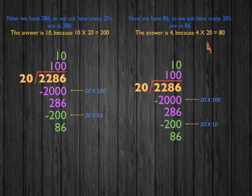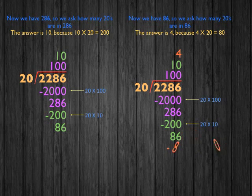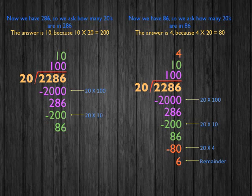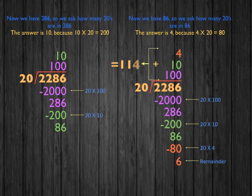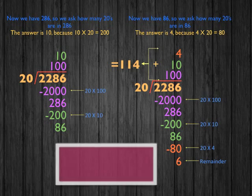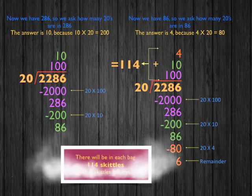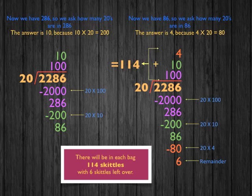Continuing the same pattern, we write 4 on top, then subtract 80 from 86, giving us 6. That is our remainder, because 20 cannot go into 6. We then take the three numbers at the top and add them: 100 plus 10 plus 4 equals 114. In conclusion, there will be 114 Skittles in each bag with 6 Skittles left over.